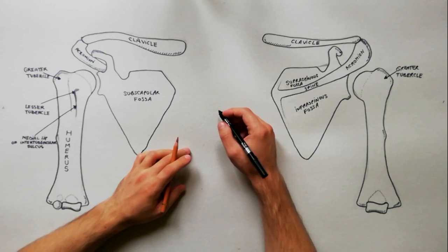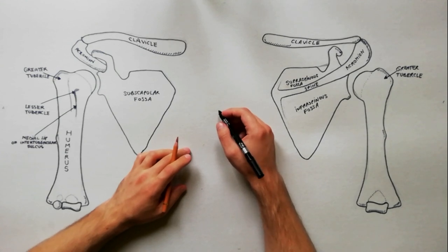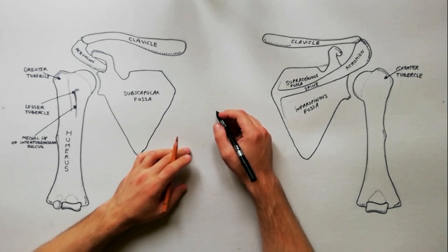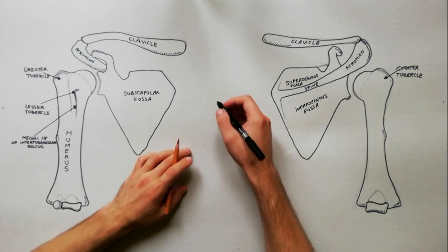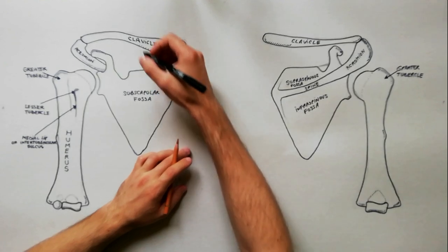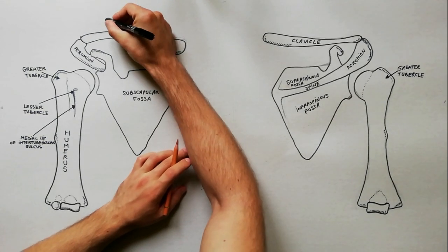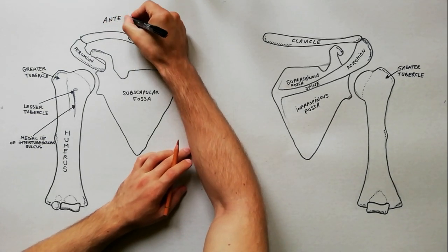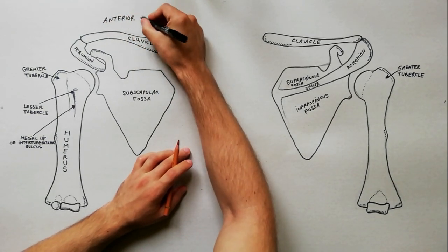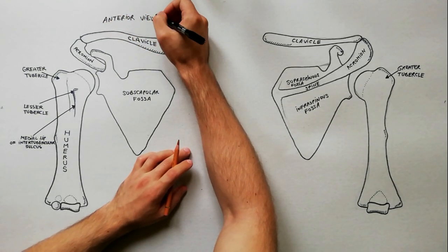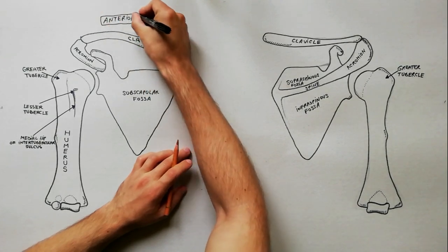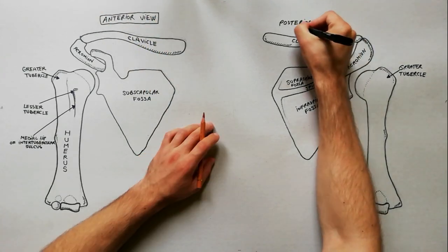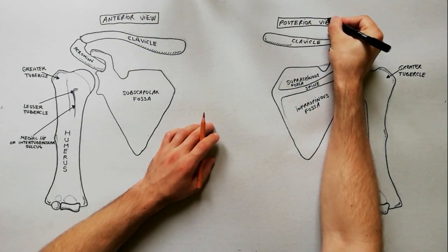We observe two diagrams of the humerus, scapula and clavicle. The left diagram is seen from an anterior view and the right one is seen from a posterior view.